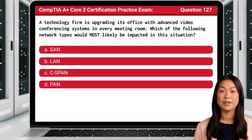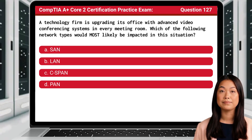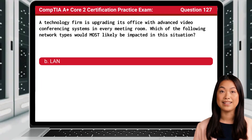Question 127. A technology firm is upgrading its office with advanced video conferencing systems in every meeting room. Which of the following network types would most likely be impacted in this situation? The answer is B: LAN.